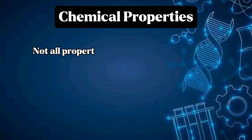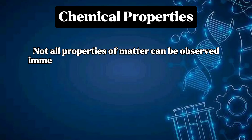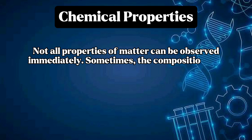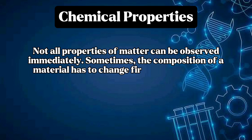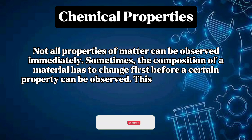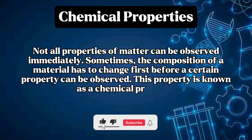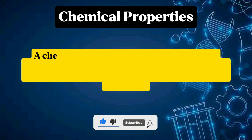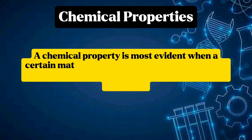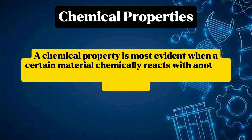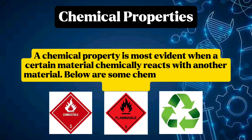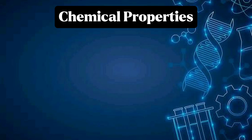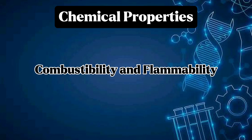Not all properties of matter can be observed immediately. Sometimes the composition of a material has to change first before a certain property can be observed. This property is known as a chemical property. A chemical property is most evident when a certain material chemically reacts with another material. Some chemical properties of materials include combustibility and flammability.